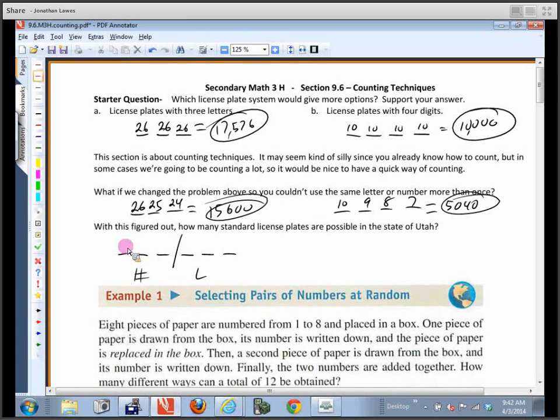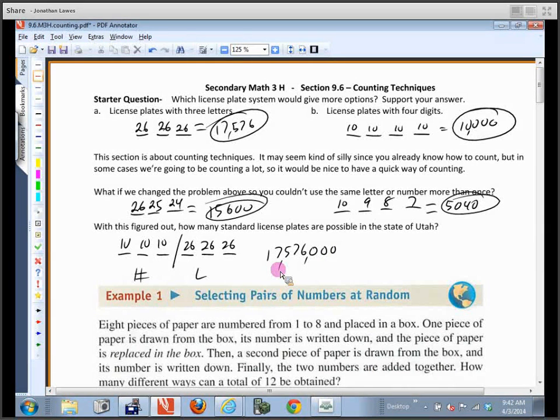And do they allow repeats? They do. So we'd have 10, 10, and 10, and then we have 26, 26, and 26. So we multiply them together. Isn't that what it would be? Oh no, no, no, no, one fewer zeros. Is that right? Okay, is that the right number? Yeah.